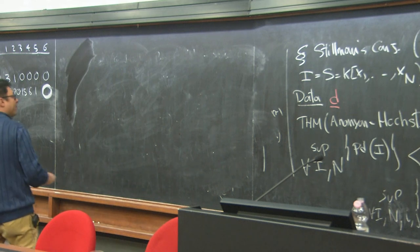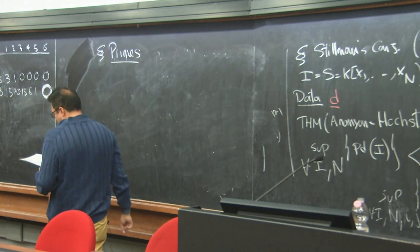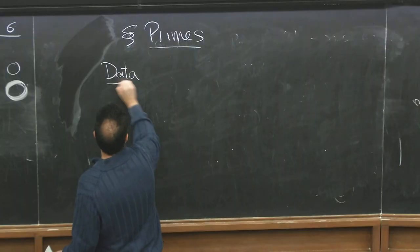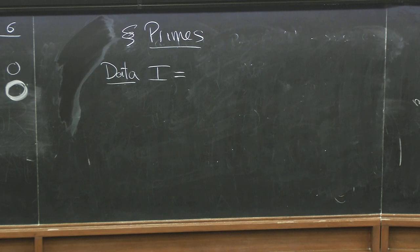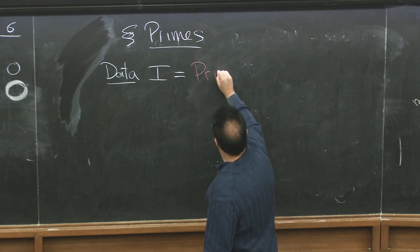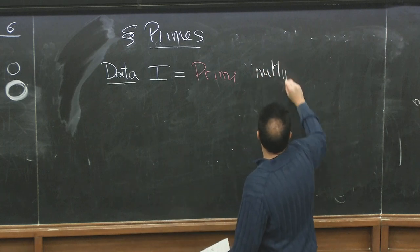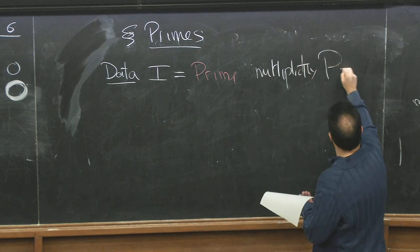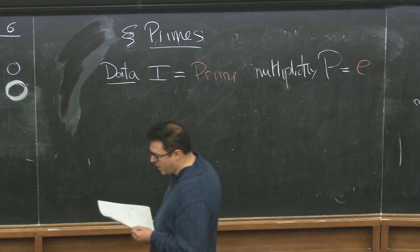So what's next? I want to change the data a little bit and I want to focus on primes, prime ideals. Focusing on primes, my data is going to be the fact that the ideal I is actually a prime, and another part of the data that I want to fix is that the multiplicity of S mod I, of the prime, is fixed, is some number E. Fixed multiplicity, fixed the fact that we're working with primes.